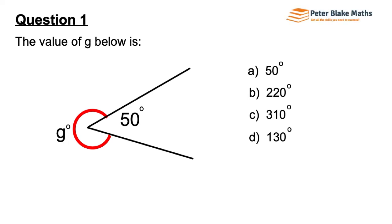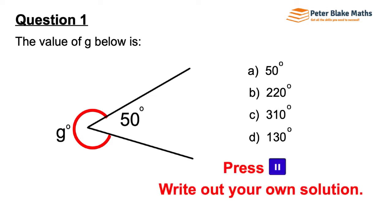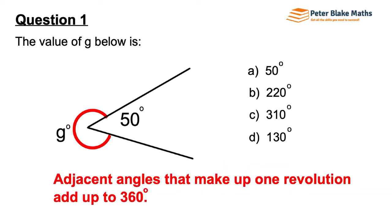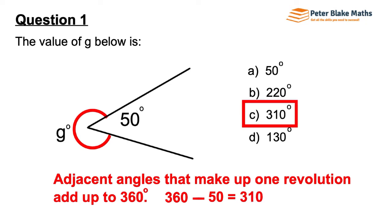Question 1. The value of G in the diagram below is... Adjacent angles that make up one revolution add up to 360 degrees. You can see that G and the 50 make up one whole circle, one whole 360 degree loop. So if we have 360 degrees and take away that 50, we get the value of G. So 360 degrees minus 50 equals 310 degrees.